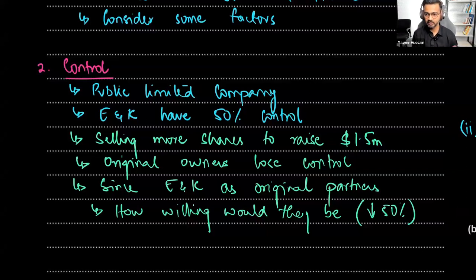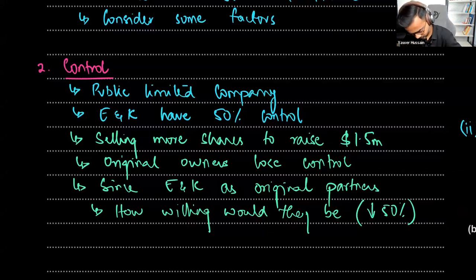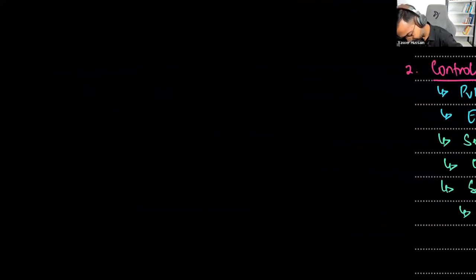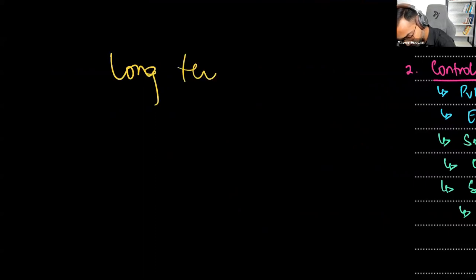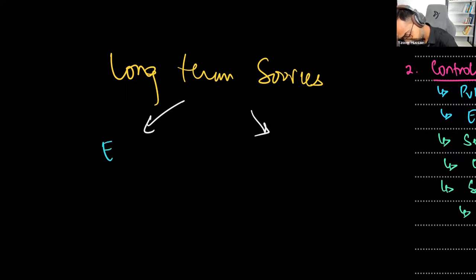When thinking of long-term sources, everything divides into two simple types: equity finance — where you sell shares, which PP can do as a public limited company — or debt finance, where you pay interest. Examples of debt finance include a long-term bank loan, debentures, or a mortgage. Mortgage is usually for land, and since we're talking about a factory, land must be involved. If debentures aren't mentioned in the case study, you cannot mention them.